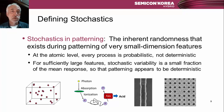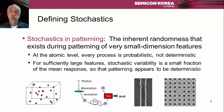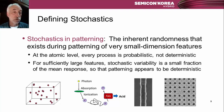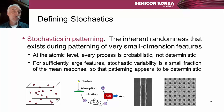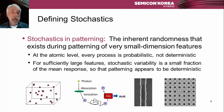Let's define the very word. Stochastics in patterning for semiconductor manufacturing is the inherent randomness that exists during patterning of very small dimension features. The reason is very fundamental: at the atomic level, every single process is probabilistic, not deterministic. Everything involves randomness — absorption of photons, chemical reactions in photoresists, how that turns into a feature during post-exposure bake and development. All of these events are fundamentally probabilistic. But for sufficiently large features, stochastic variability is averaged out over a larger region and is therefore a small fraction of the mean response — the average behavior is deterministic, and patterning looks deterministic.